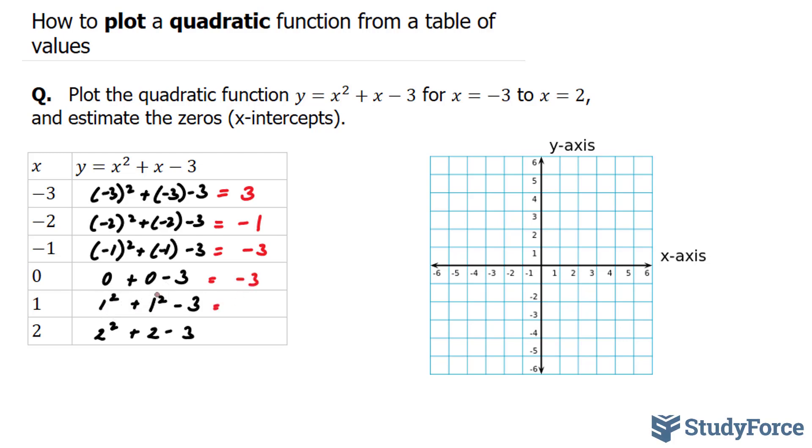1 plus 1 is 2, because 1 to the power of 2 is 1. Minus 3, we have negative 1. And lastly, 2 to the power of 2 is 4, plus 2 that's 6, minus 3 is positive 3. So now we have the points negative 3 and 3.